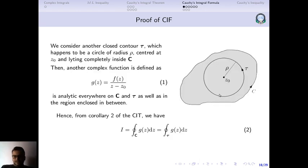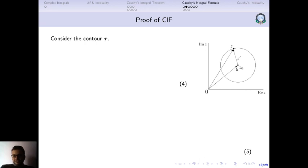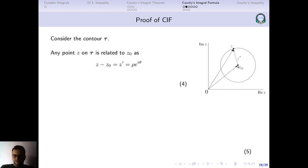Now we will have a look at this contour a little bit more closely. The central point of this contour is z₀. z is any point on this loop tau, and z′ is the difference between these two. So z is related to z₀ as: z minus z₀ equals z′, which we call ρe^(iθ). As z goes around this entire loop, the distance from z₀ will remain the same, but the argument θ about z₀ will change. So θ is that argument about z₀.